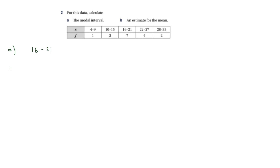An estimate for the mean is slightly harder, because the data gives us intervals like 4 to 9 or 10 to 15 rather than single values. So we need to work out the midpoint of each interval, multiply it by the frequency, and then divide by the total of all frequencies.